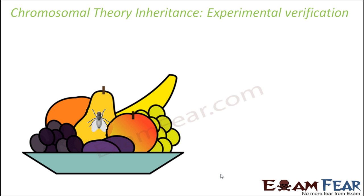The chromosomal theory of inheritance also needed experimental verification. Just as Mendel performed a lot of experiments to come up with his laws of inheritance, similarly, in order to prove the chromosomal theory of inheritance, experimental verification was required.